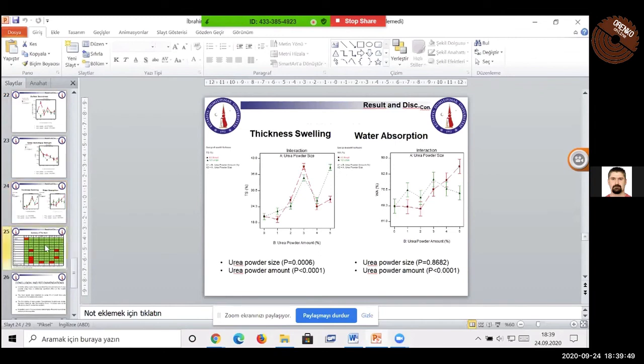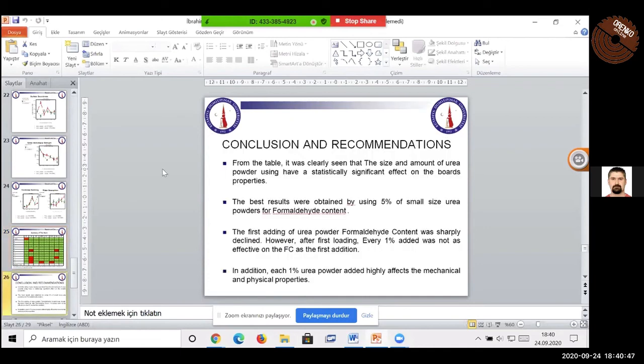I think I used to go to this summary of the work. We can see from here, this is the control group for the formaldehyde content. This is the formaldehyde emission E2 class. But after we used the small or large UREP powders as a formaldehyde scavenger, they provided the standard requirements for the formaldehyde content. And you can see from here, just for small size, just five percent of UREP powders used boards not satisfied for the IB test, but other properties were satisfied for the standards. From the table, it was clearly seen that the size and amount of the UREP powders using have a statistically significant effect on the board's properties.